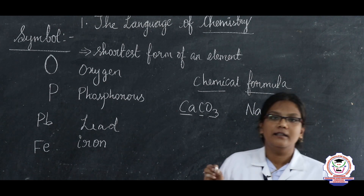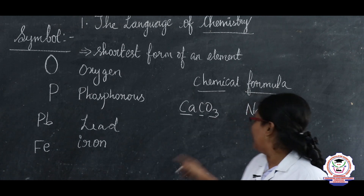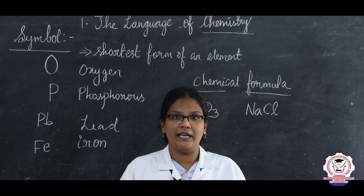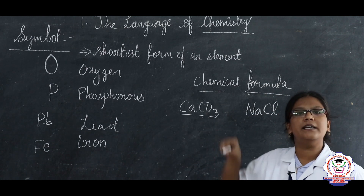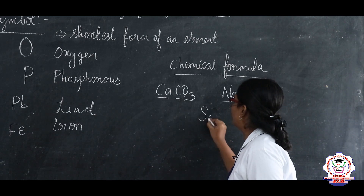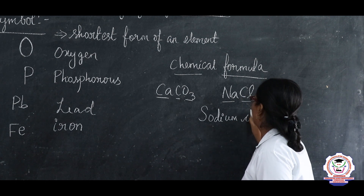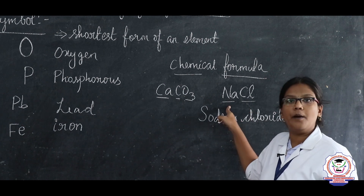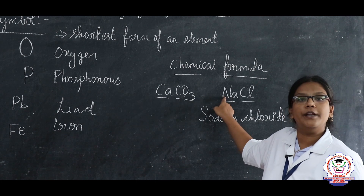Have you heard this chemical before? NaCl. Do you know where NaCl is used? NaCl means sodium chloride and it is the common salt we use in home cooking. What are the elements present in NaCl? Na and Cl. The name of NaCl is sodium chloride. How is sodium chloride formed? It is a chemical compound made up of sodium and chlorine atoms that combine to form sodium chloride.